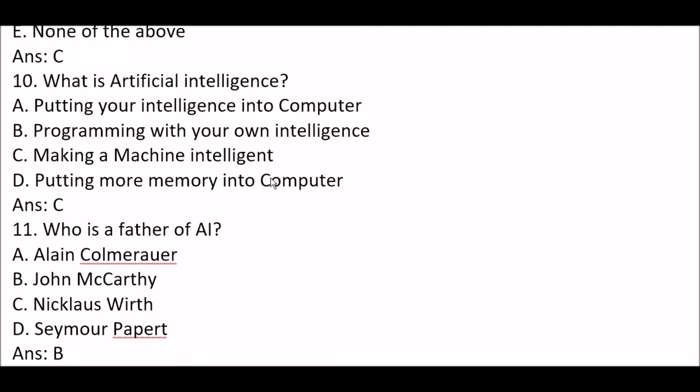Next question: what is artificial intelligence? Option A: putting your intelligence into a computer. Option B: programming with your own intelligence. Option C: making a machine intelligent. Option D: putting more memory into a computer. The right answer is Option C — artificial intelligence is making a machine intelligent.